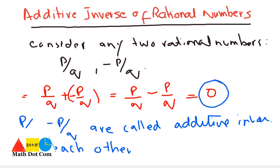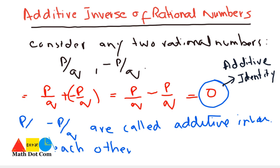This zero is called the additive identity. Keep in mind the difference: the additive inverse is the same number with the opposite sign, and the additive identity is zero — zero is the result of adding two rational numbers that are additive inverses of each other.